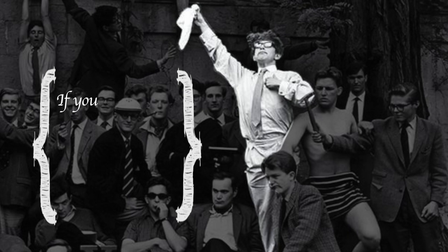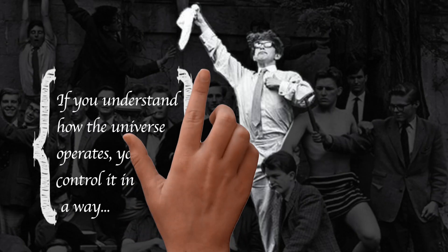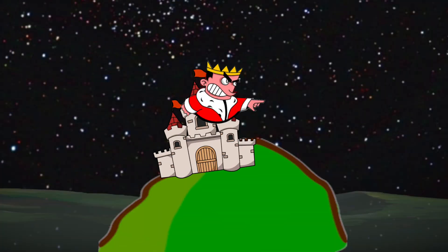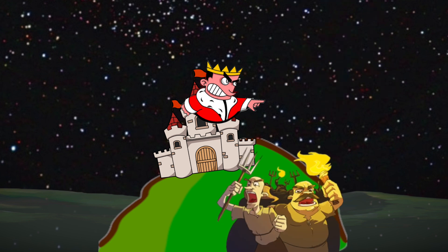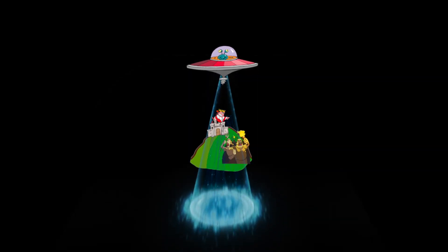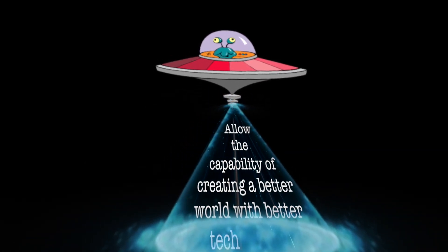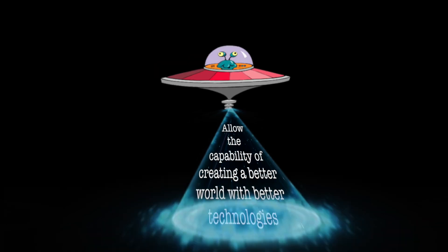Stephen Hawking once said, if you understand the way the world works, you control it in a way. But this isn't power like, take over the labs, enslave the enemy, burn their crops and supplies or harness it for intergalactic domination of alien races. It's the type of power to allow the capability of creating a better world with better technologies. But technology is often a word that's misunderstood.